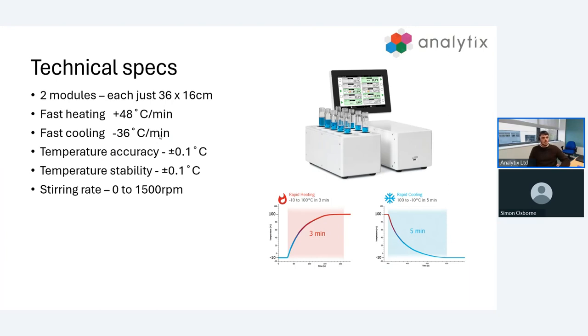We're able to heat and cool really rapidly. We have a heating rate of 48 degrees a minute, meaning we can go from minus 10 to 100 degrees in as little as three minutes. Same story with cooling - we can go from 100 to minus 10 in just five minutes.